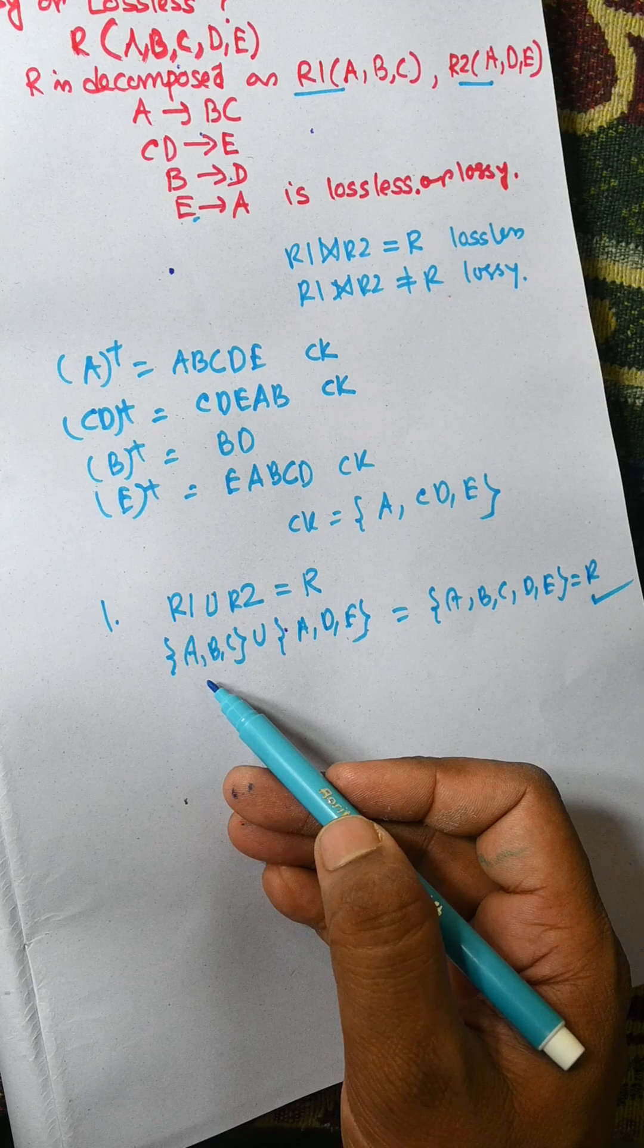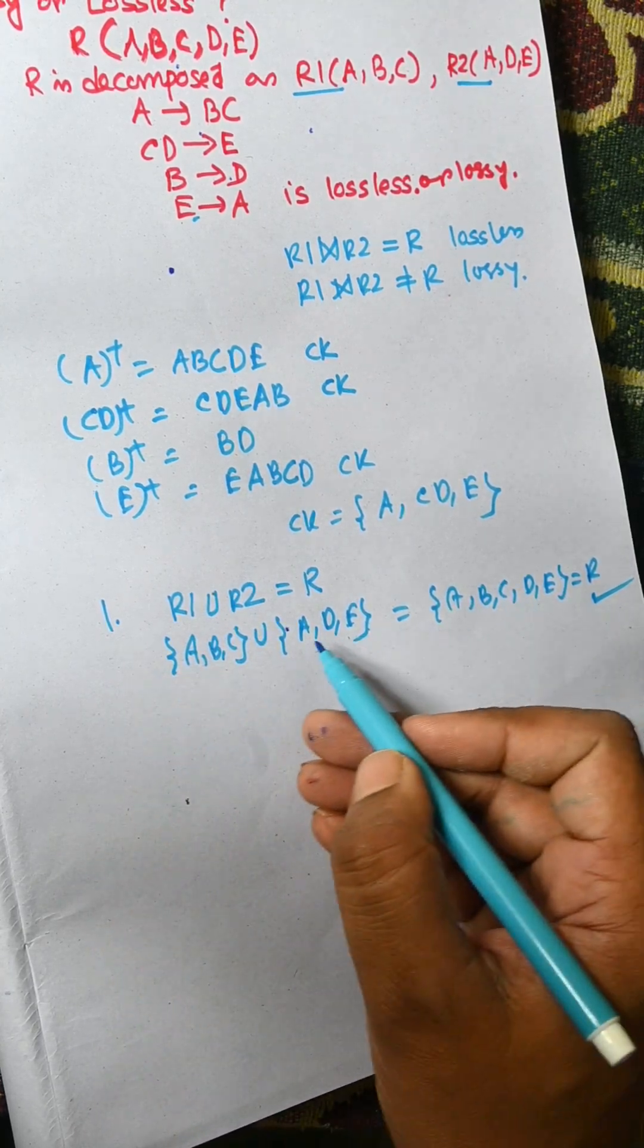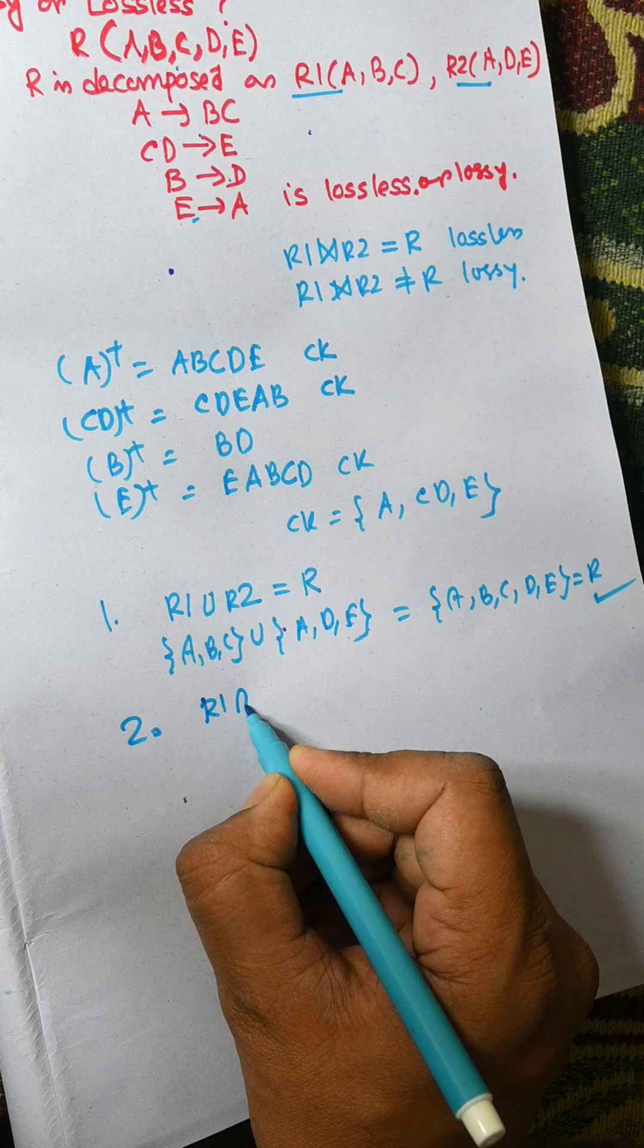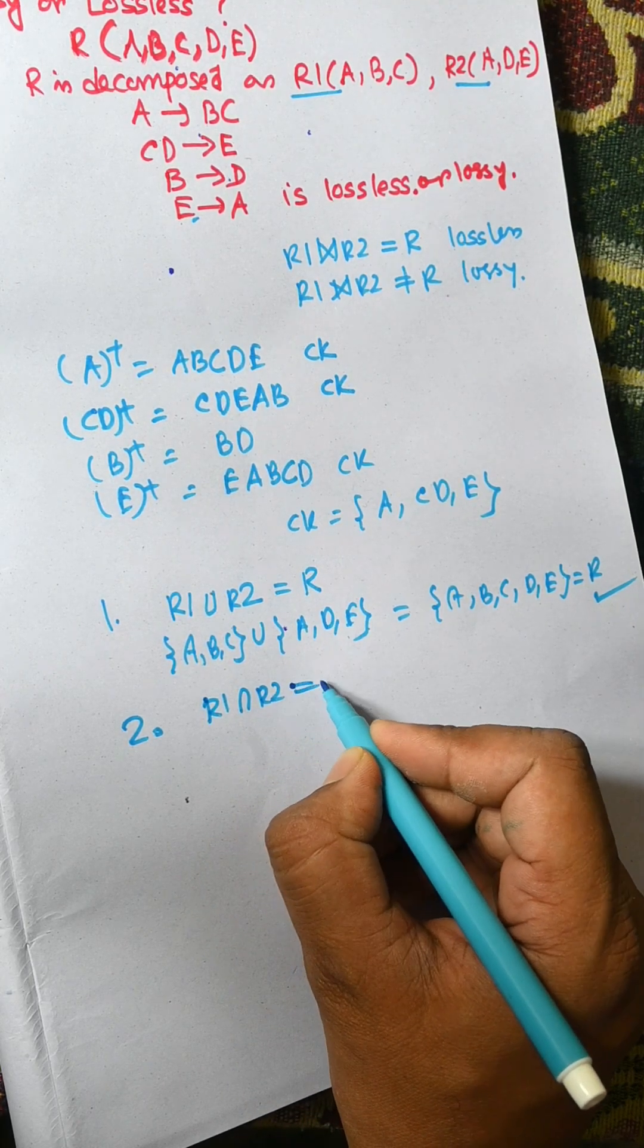If this is false, then we can say it is lossy. If it is true, then we need to check the next rule. We need to check R1 intersection R2 should not be phi.